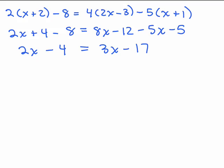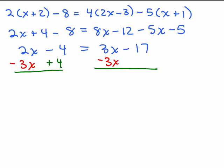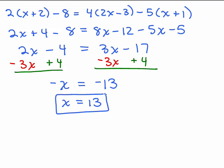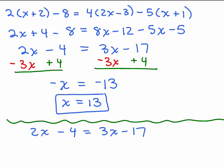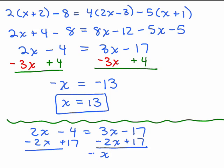Now I need to get variables on the left and constants on the right. I'll subtract 3x from both sides, and add 4 to both sides. So 2x minus 3x gives negative x equals negative 13. Then take the opposite of both sides: x equals positive 13. Alternatively, since 3 is bigger than 2, you could have subtracted 2x from both sides, putting the variables on the right, then added 17 to both sides, getting x equals 13 without a minus sign.